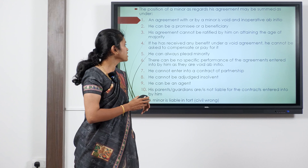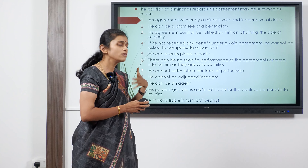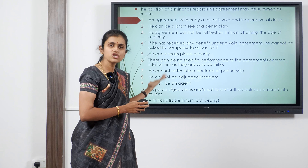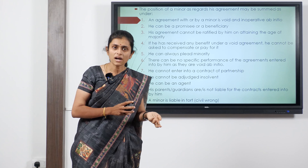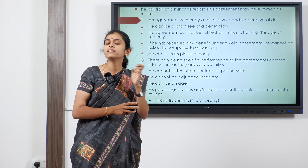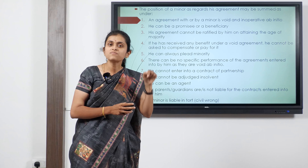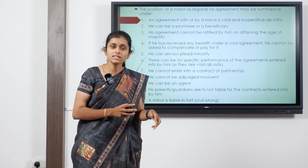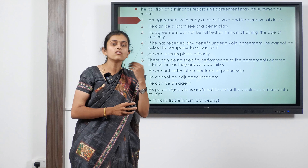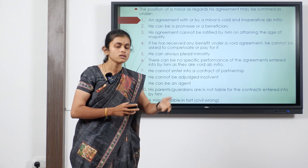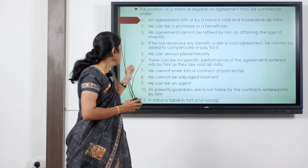Sixth, there can be no specific performance of agreements entered into by a minor, as they are void ab initio. Any agreement entered into by a minor is void from the beginning and the court cannot ask for specific performance — the court cannot enforce the minor to perform his promise.